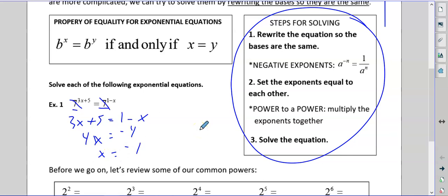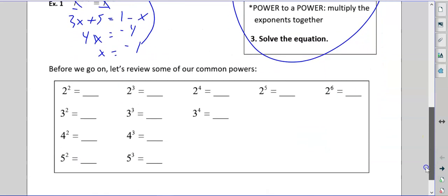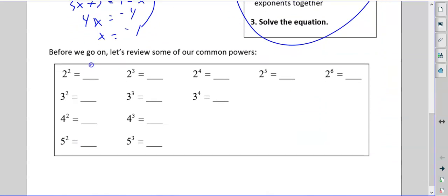And again, the beauty of math is I can plug this in. 3 times negative 1 is negative 3 plus 5 is positive 2. And if I plug it in here, 1 minus a negative 1 is 1 plus 1, which is 2. So they're both 2, which means 7 squared equals 7 squared. 49 equals 49. So real quickly, even though you have these, you can pause if you want, or you can fast forward to the end.